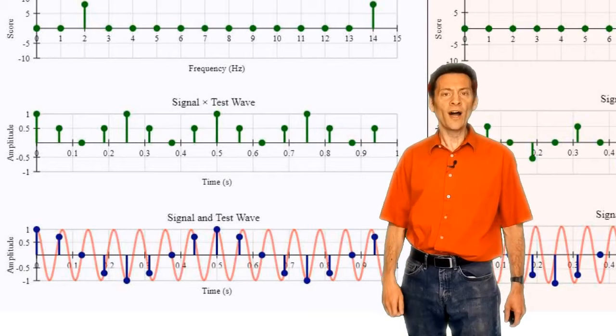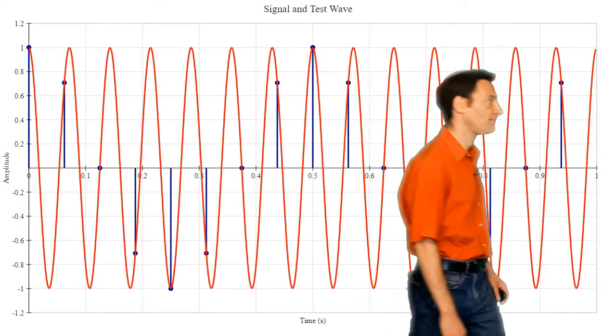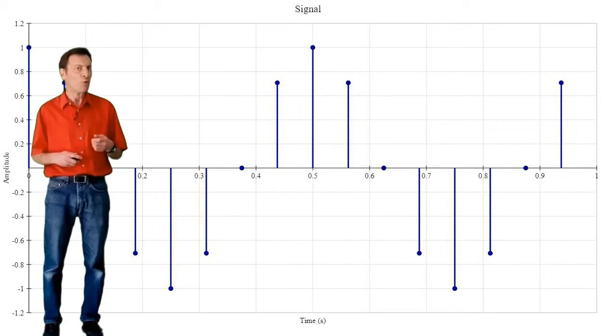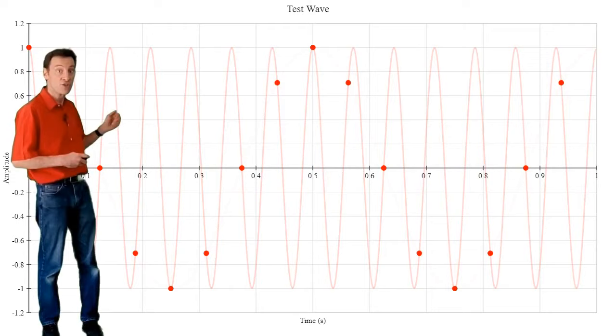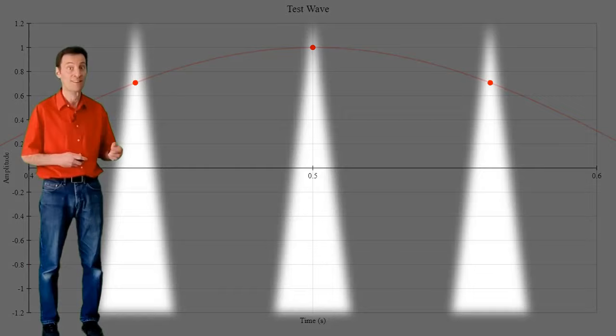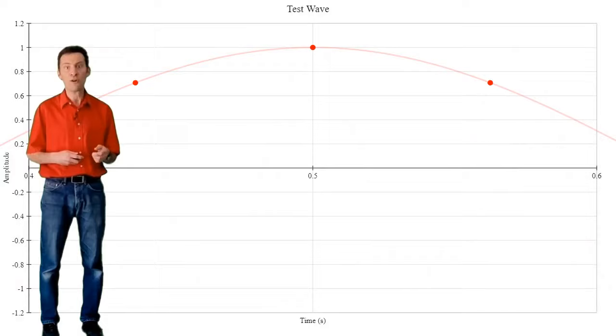To find out why this is, we need to look at the signal and the 14Hz test wave. Remember, the signal is sampled. And we only perform the multiplication at the points where information about the signal exists. At 14Hz, the test wave occupies exactly the same sampled values as the 2Hz test wave. The fact that the 14Hz test wave has oscillated between the samples makes no difference to the discrete Fourier transform, as anything can happen between the samples, and the DFT wouldn't know about it.